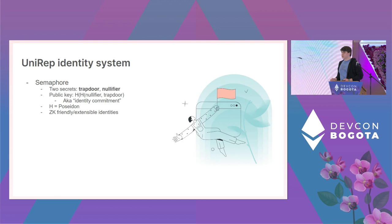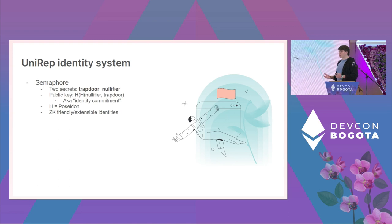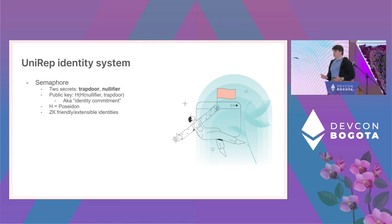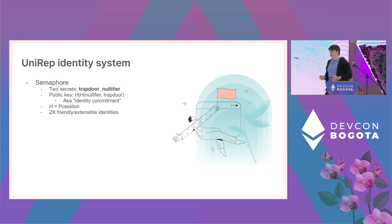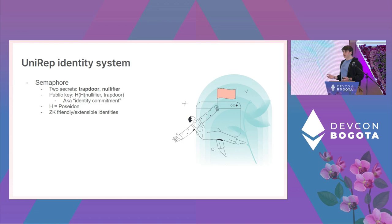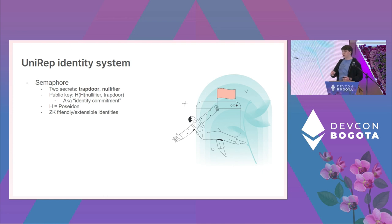We build on top of Semaphore, developed by the Privacy and Scalability team. Semaphore has a public-private key system with two secrets — a trapdoor and a nullifier — and we define a public key as the hash of the hash of those two secrets, also called an identity commitment in Semaphore. We use the Poseidon hash function to calculate these values, making it ZK-friendly and extensible. You could extend it to do signatures, for example, by writing a proof that proves the secret values and the hash of some data you want to sign.